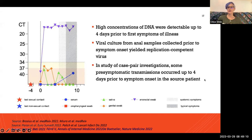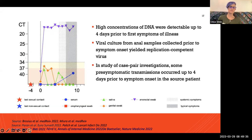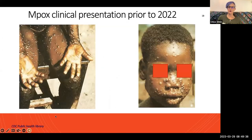High concentrations of DNA were detectable up to four days before symptoms, and viral culture from anal samples prior to symptom onset has yielded replicating virus. In some case investigations of confirmed transmission pairs, pre-symptomatic transmission occurred up to four days before symptom onset. Clinically, things are very different from the historically described disease still occurring in Africa.